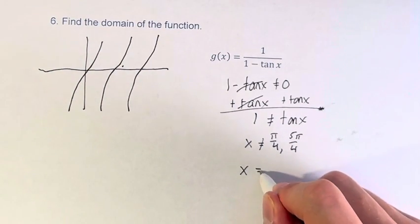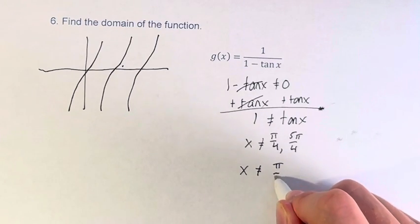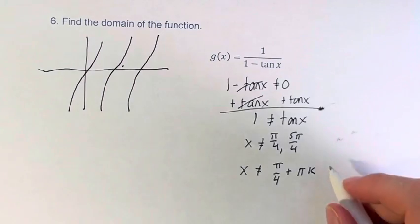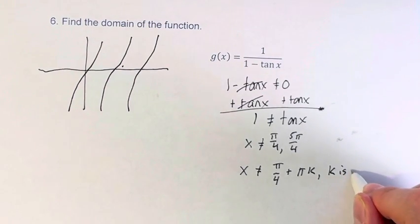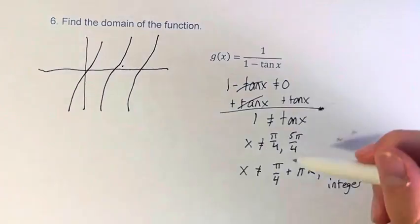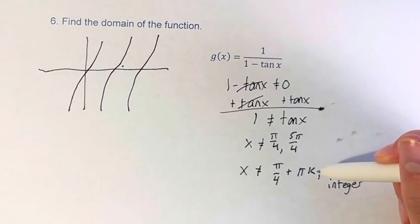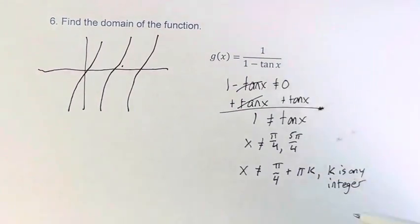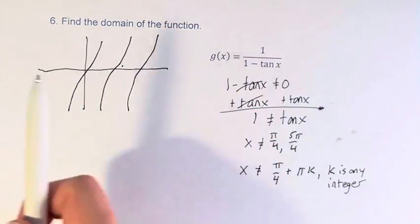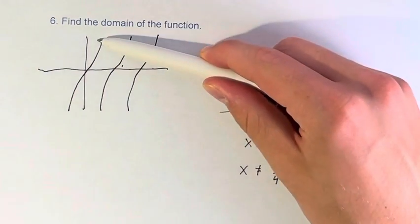So therefore, x cannot be equal to pi over 4 plus pi k, where k is any integer. We write it as pi k, because any integer will provide us with a certain number of pi to go to the right or to the left of this original function.